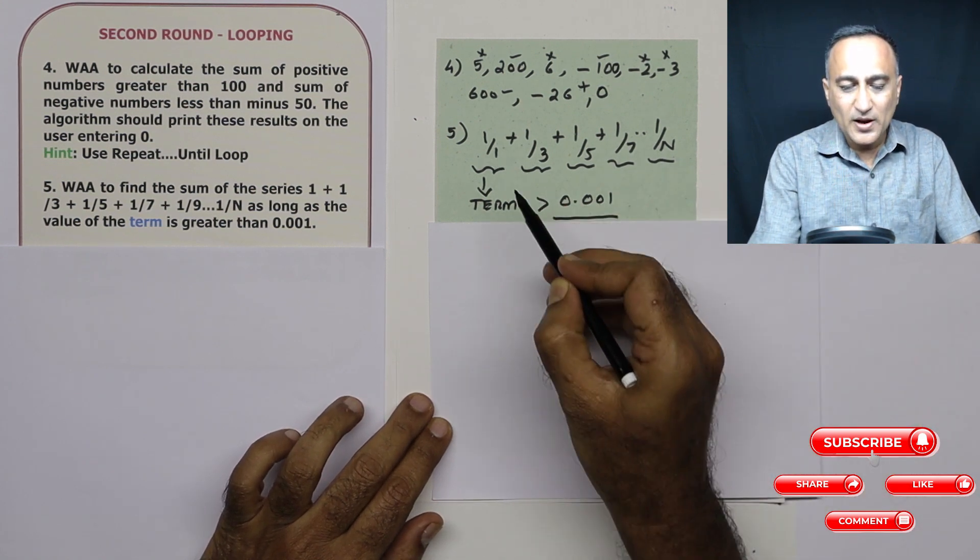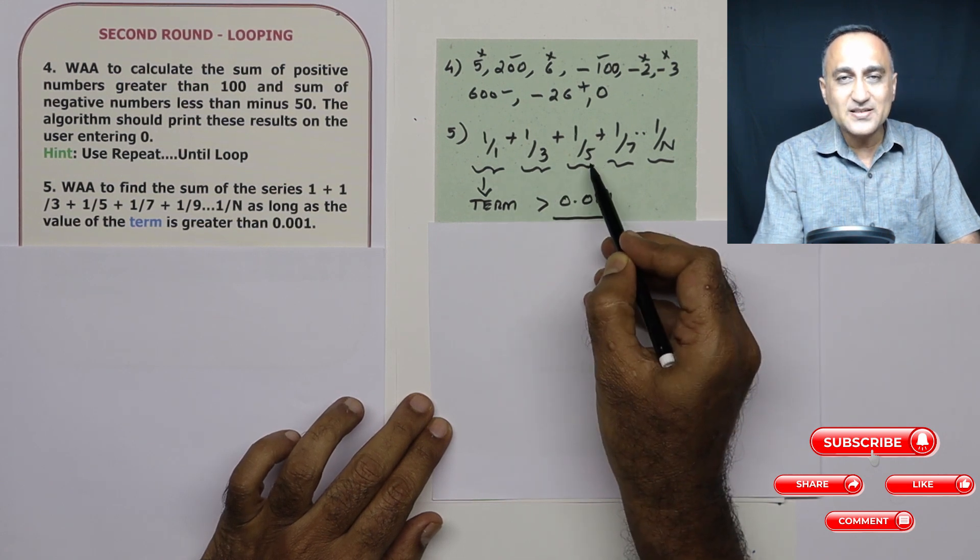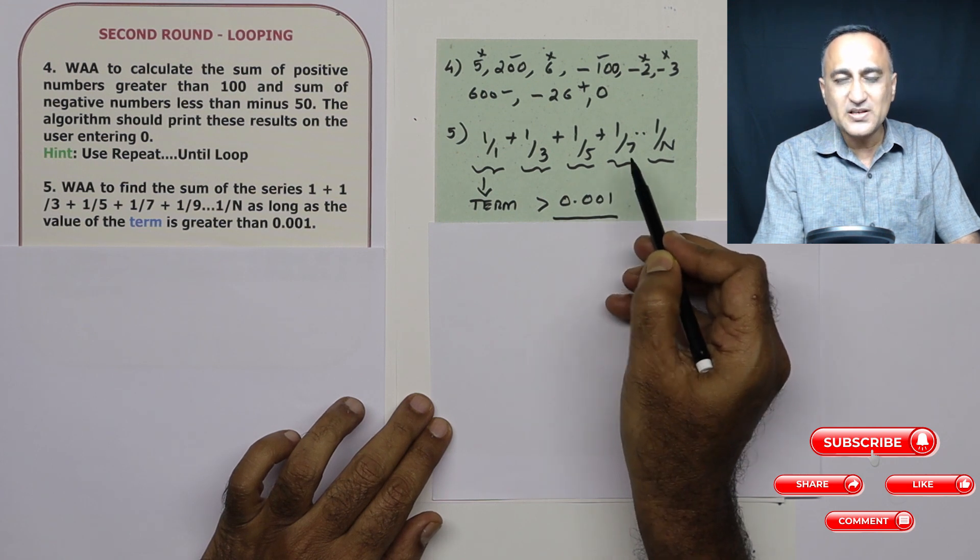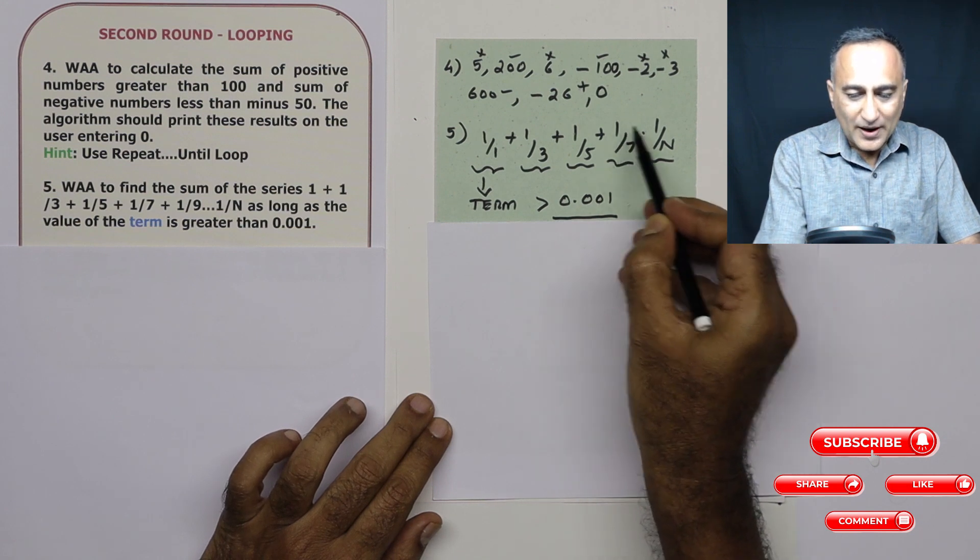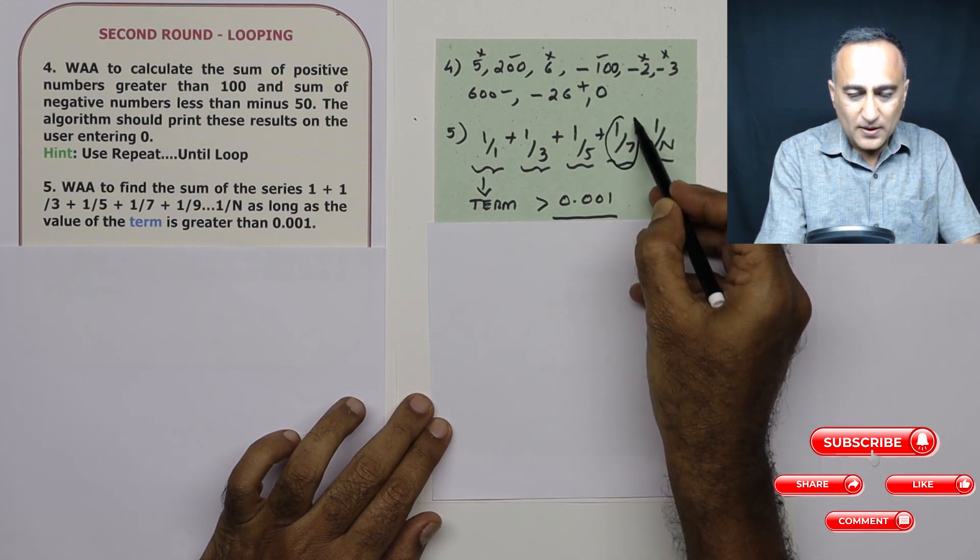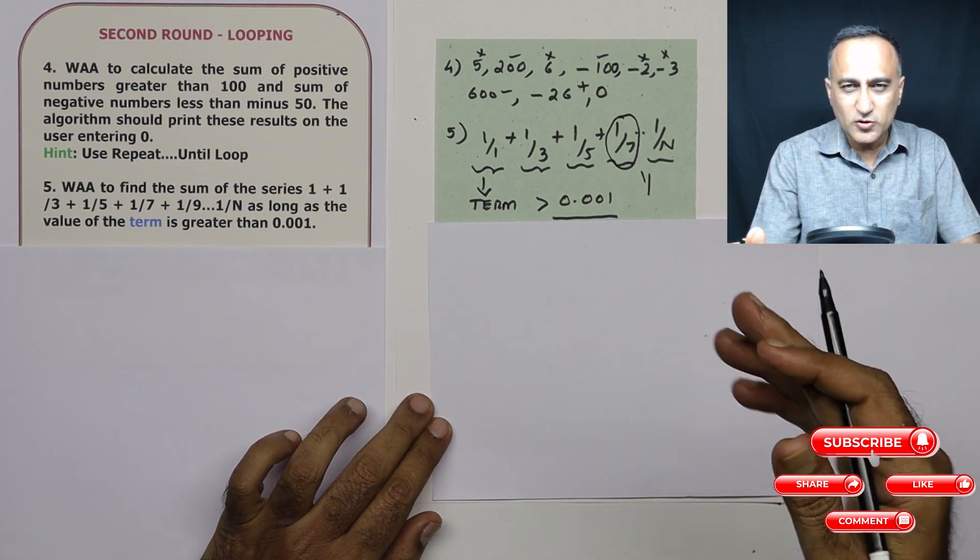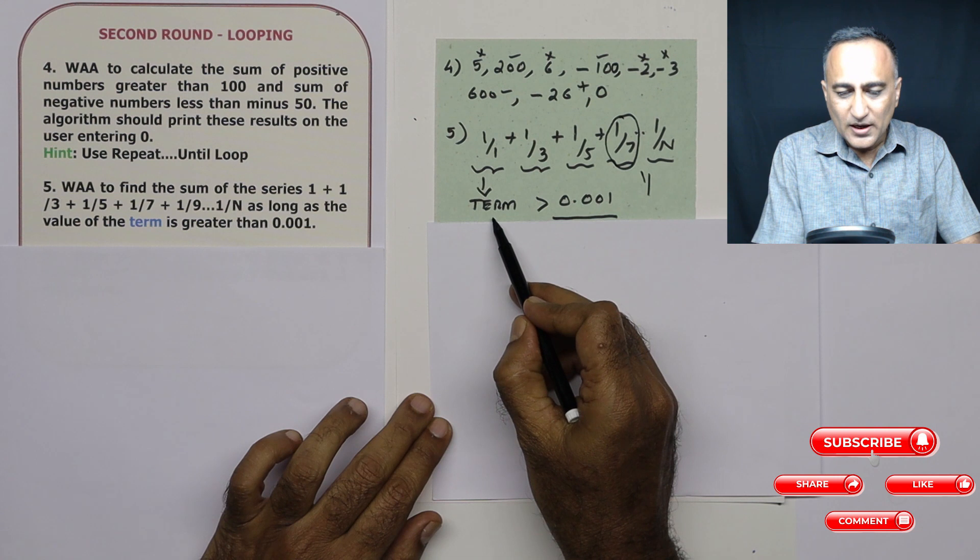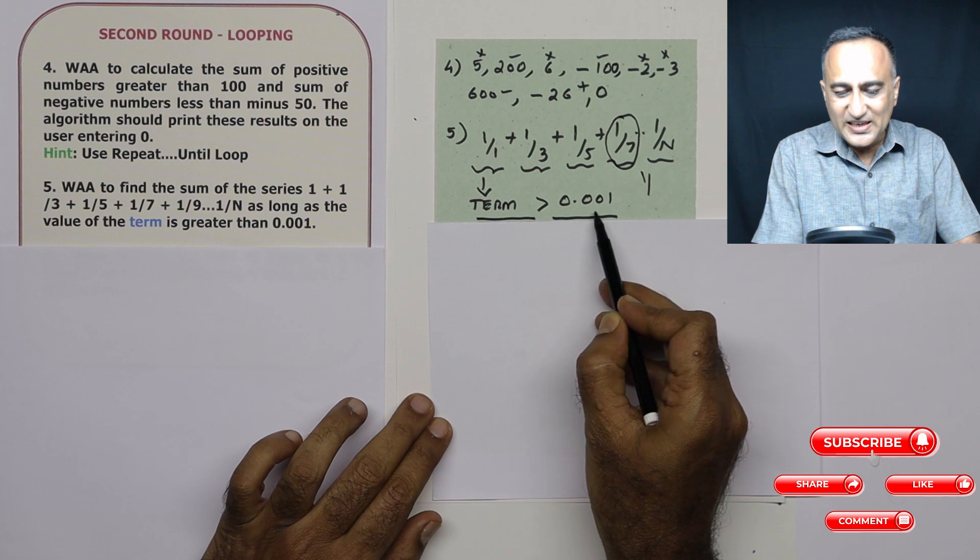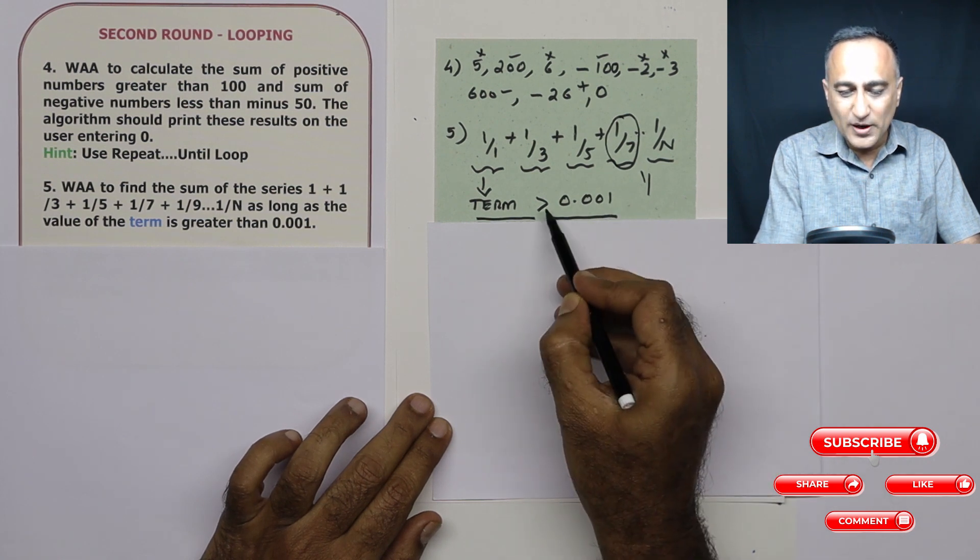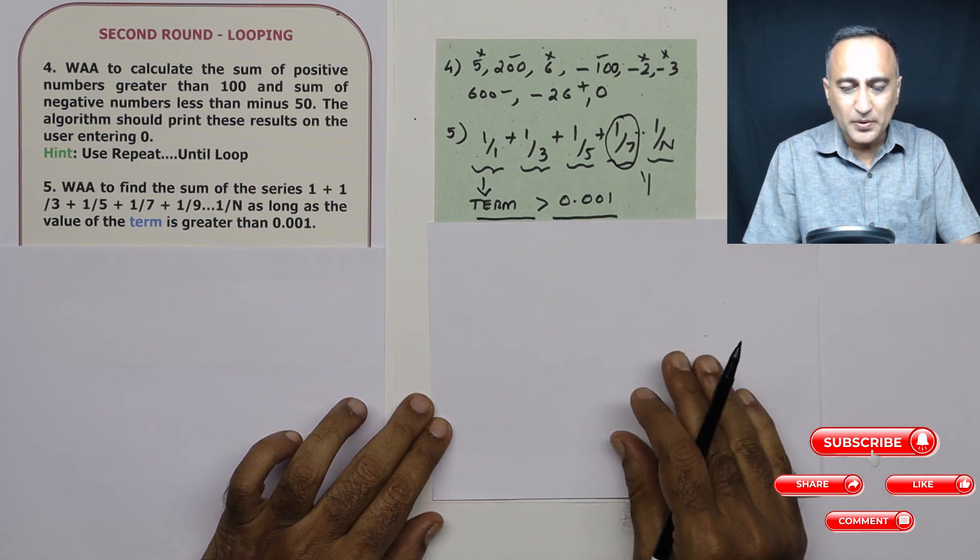What is 1 upon 1? The value of the term is 1. 1 upon 3 is 0.33. 1 upon 5 is 0.2. 1 upon 7 is 0.167 something like that. So at some point, the value of one of these, it could be 1 upon 1000 or 2000, okay, or 1 upon 1001. When the value of that term is equal to this value or lesser than this value, then you have to stop adding and then you have to print the sum.